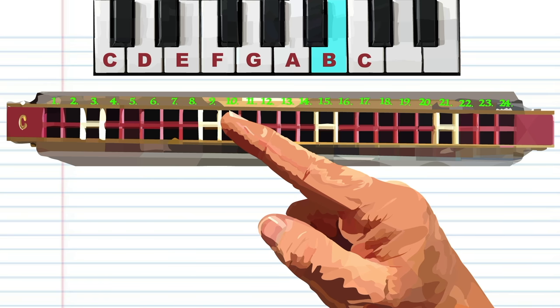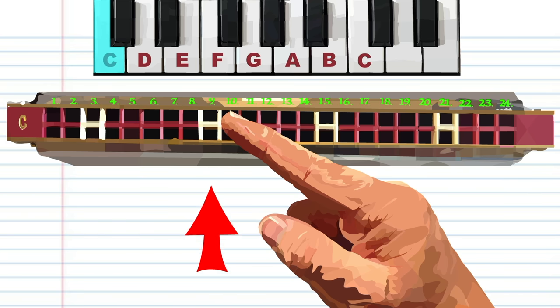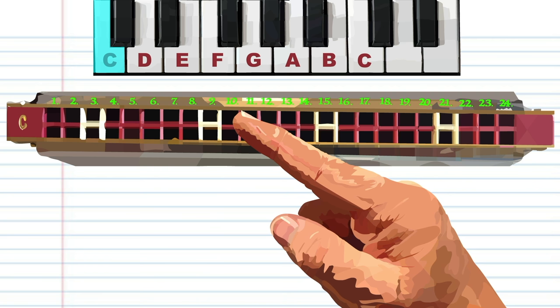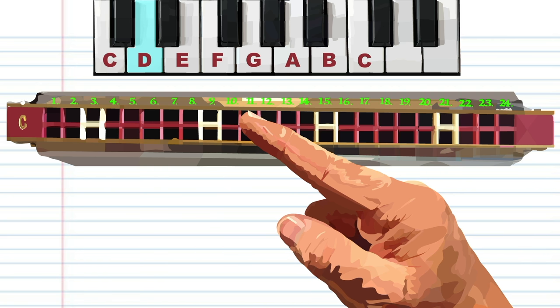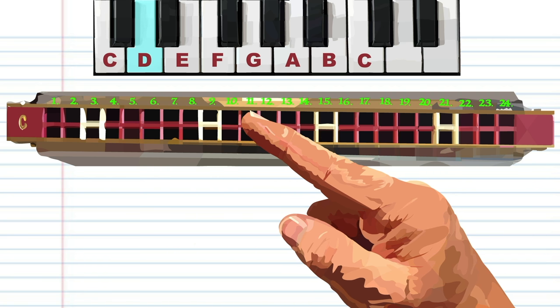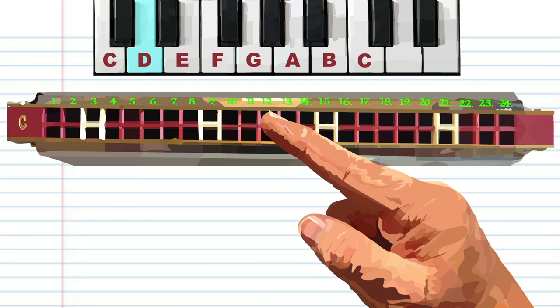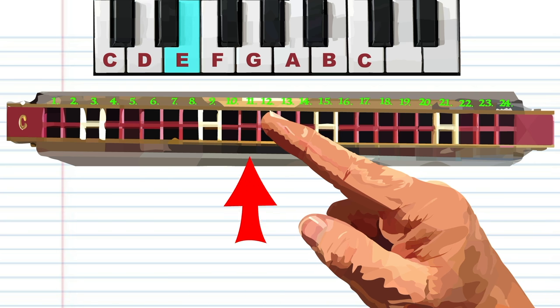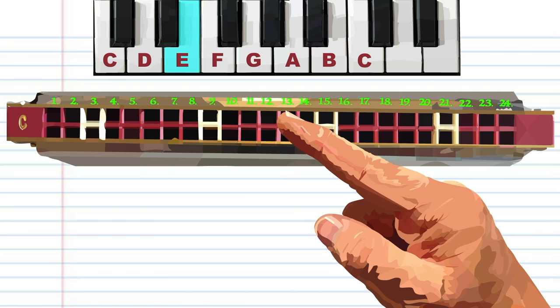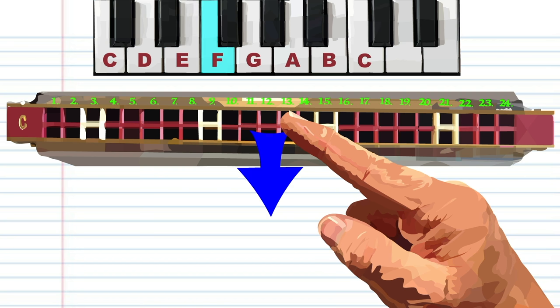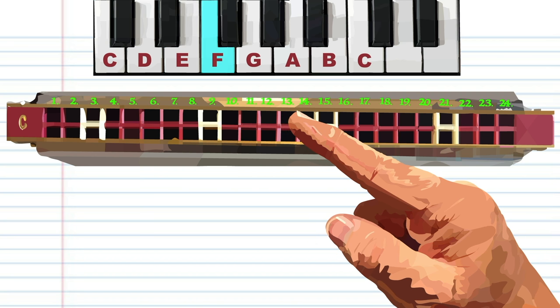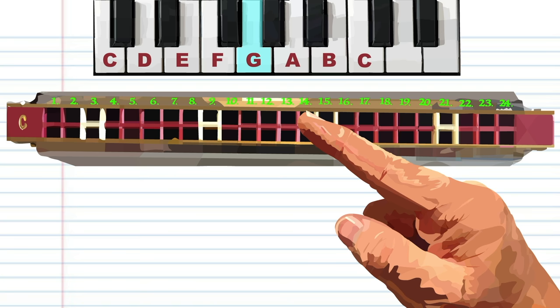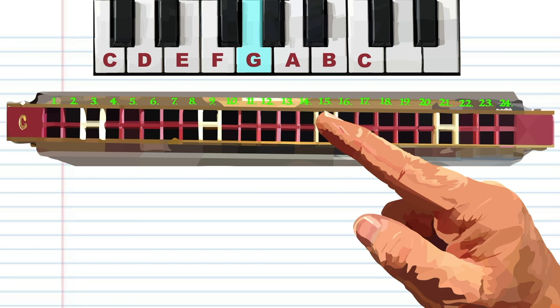Blowing into 9 is C. Breathing in through 10 is D. Blowing into 11 is E. Blowing into 12 is F. Blowing into 13 is G. Breathing in through 14 is A.